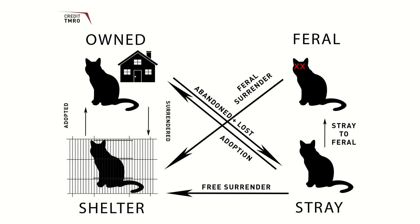They use a unique approach where the total cat population is split into four parts: owned cats, stray cats, feral cats, and cats in the shelter system. They account for cats moving between categories, such as when owned cats are lost or abandoned and when cats are adopted from the street or from shelters.